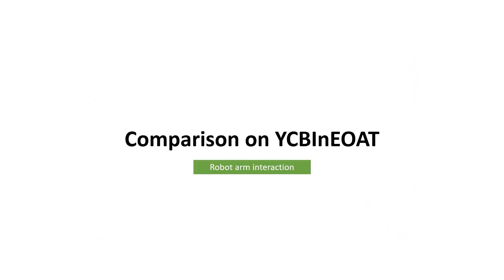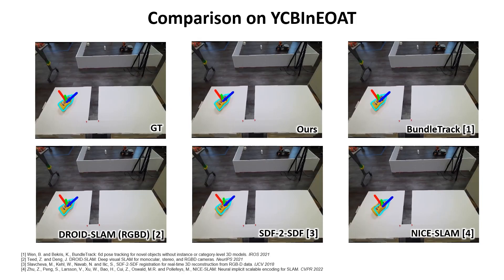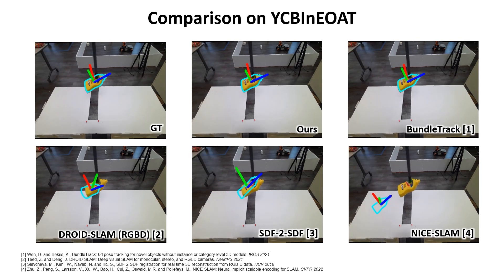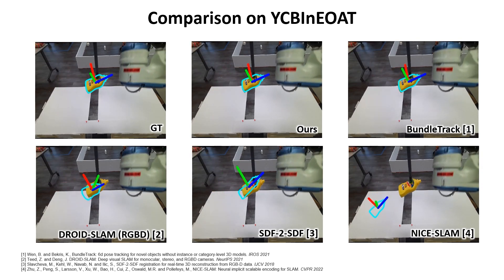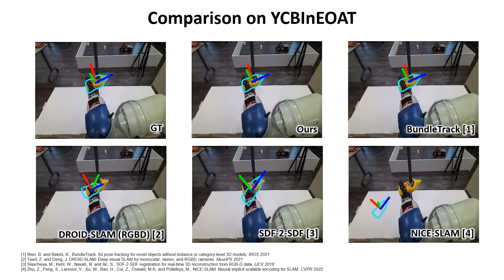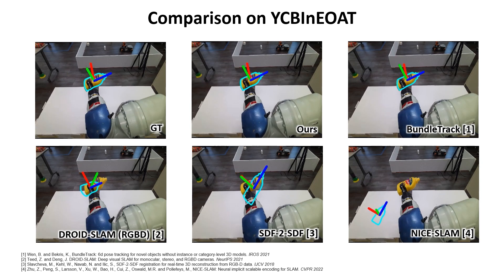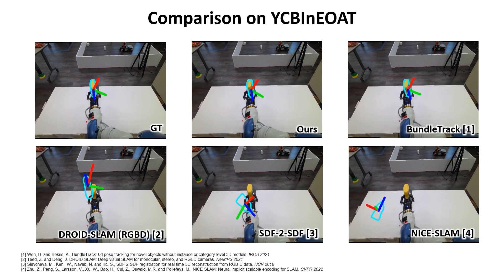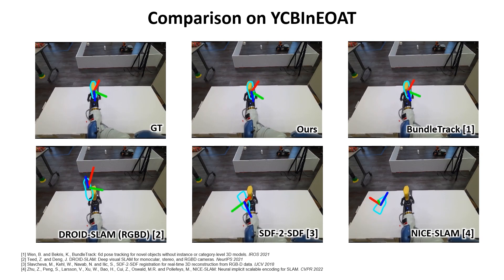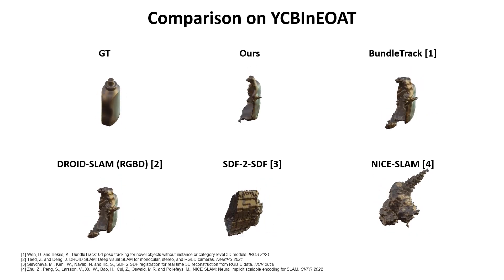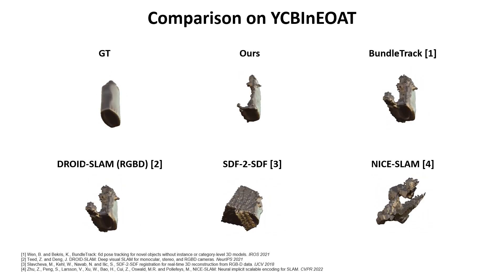Next, we show comparisons on the YCB-in-O80 dataset, which includes robot arm and object interactions. The videos are recorded from the robot's egocentric view using a Kinect camera. The robot first picks the object with the suction cup and hands over to the right arm for insertion. The whole process involves extreme rotations and severe occlusions from the robot arms. Despite these challenges, our tracking works robustly. Our final reconstruction successfully recovers all visible faces from the video.